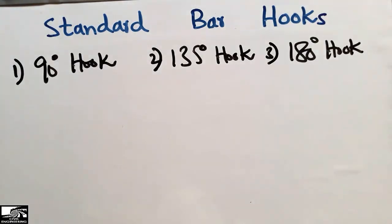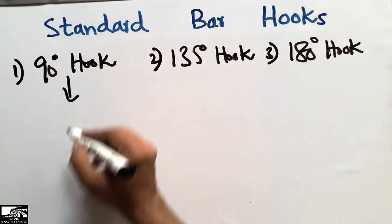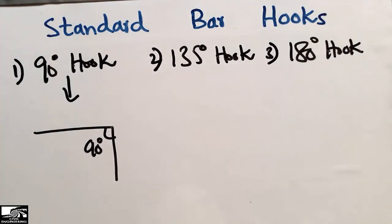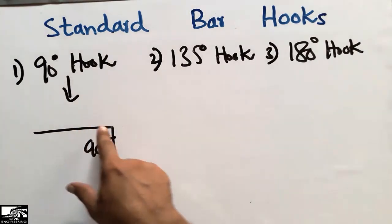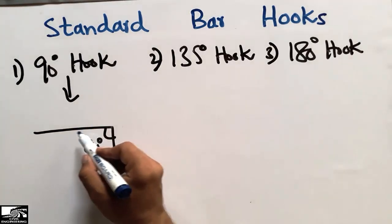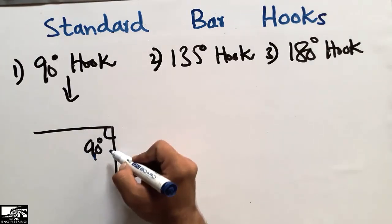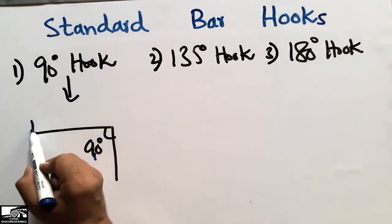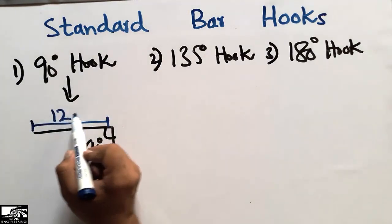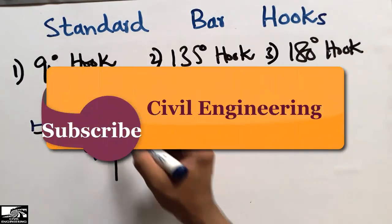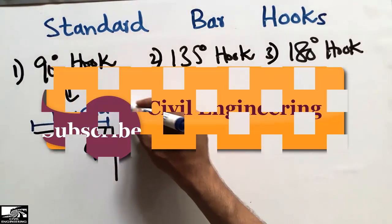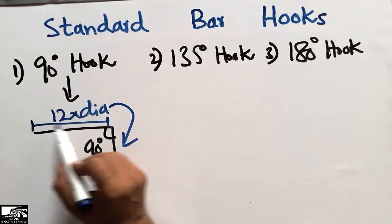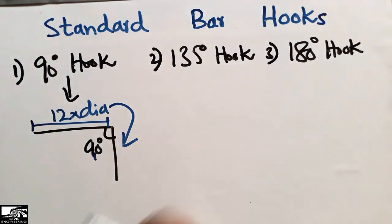The 90-degree hook is defined as the hook which is bent at 90 degrees — we can see that it is perpendicular, at 90 degrees to one another. The bending length for this hook must be equal to 12 times the diameter of the bar (12D), where D is the bar diameter.